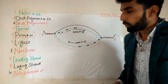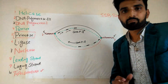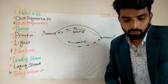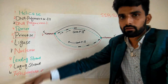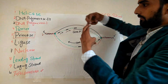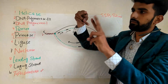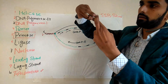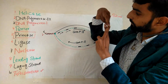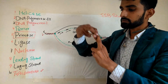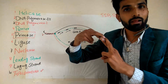The enzyme that will help helicase in this scenario is topoisomerase. Topoisomerase will untwist this super twist. For example, a super twist has been formed and these are the two strands of the double helix structure. Topoisomerase has two domains.